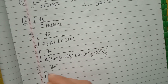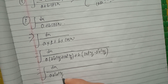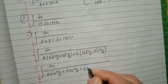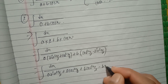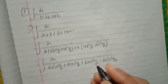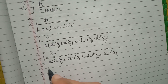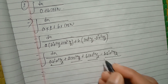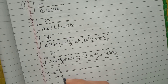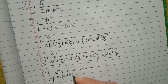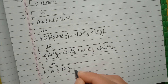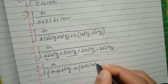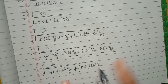Expanding the denominator: a·cos square x by 2 plus a·sine square x by 2 plus b·cos square x by 2 minus b·sine square x by 2. Combining like terms: (a plus b)·cos square x by 2 plus (a minus b)·sine square x by 2.